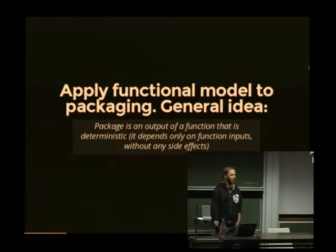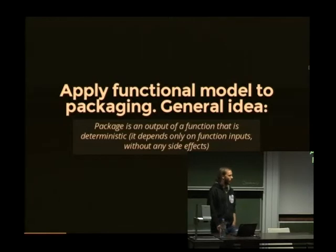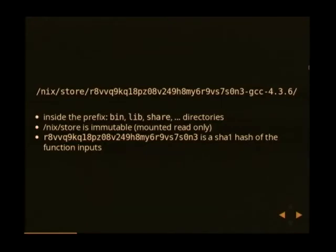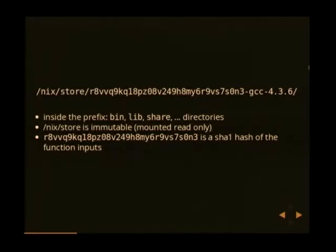The idea behind Nix is to apply the functional language model to packaging. A package is the output of some function, and all the inputs to that function are the instructions for how the package is built. All packages are stored in /nix/store with a hash prefix followed by the name and version. Inside that directory — which is the prefix where packages are installed — you have directories like bin, lib, share, and so on. The nix store is immutable, mounted as read-only, so you cannot modify it. Once a package is built and stored, you can no longer change it — that's how we ensure it truly is the output of the function specified in your Nix package.